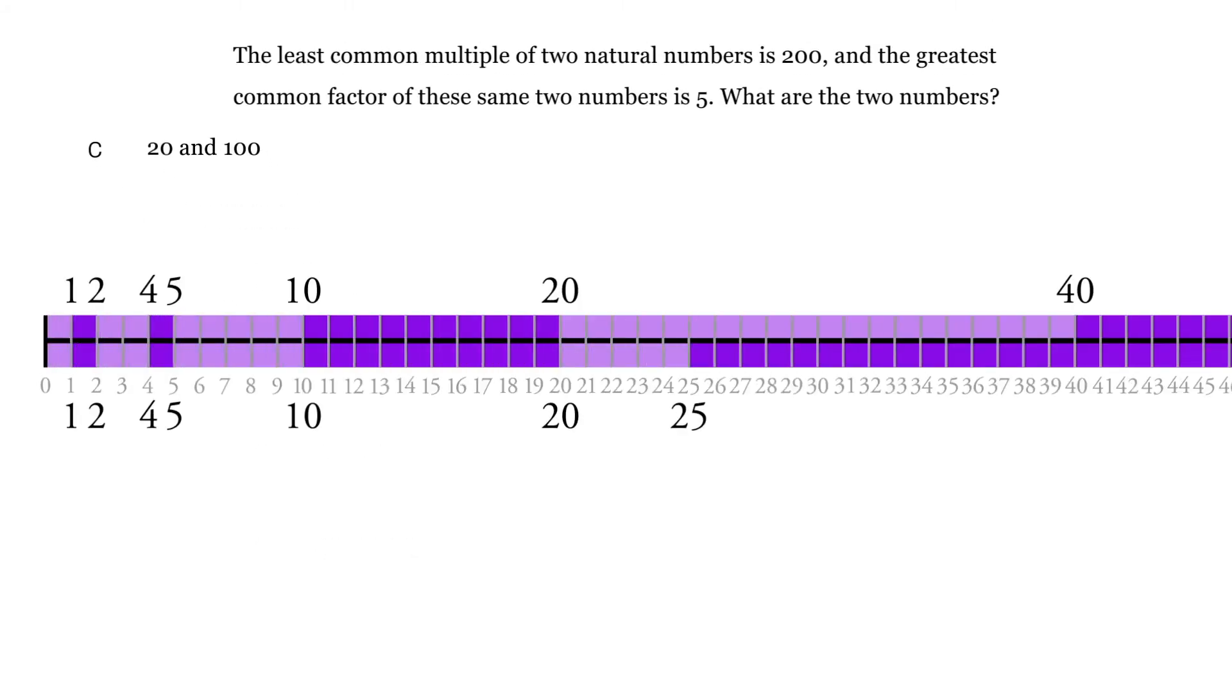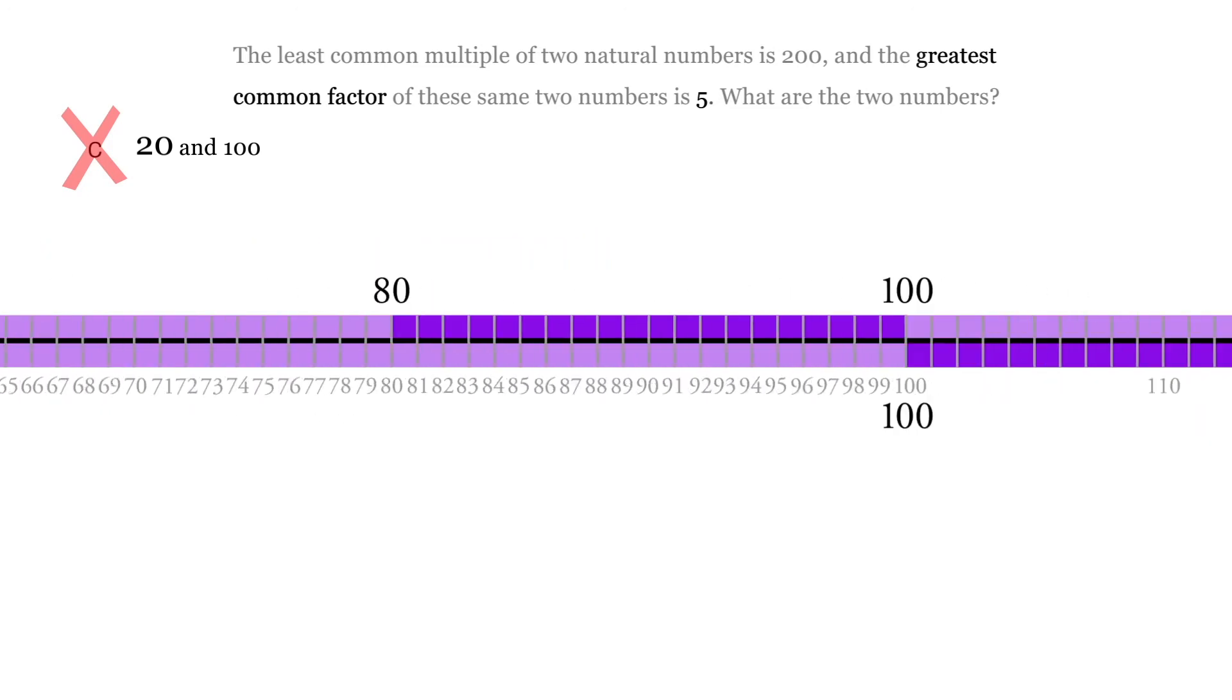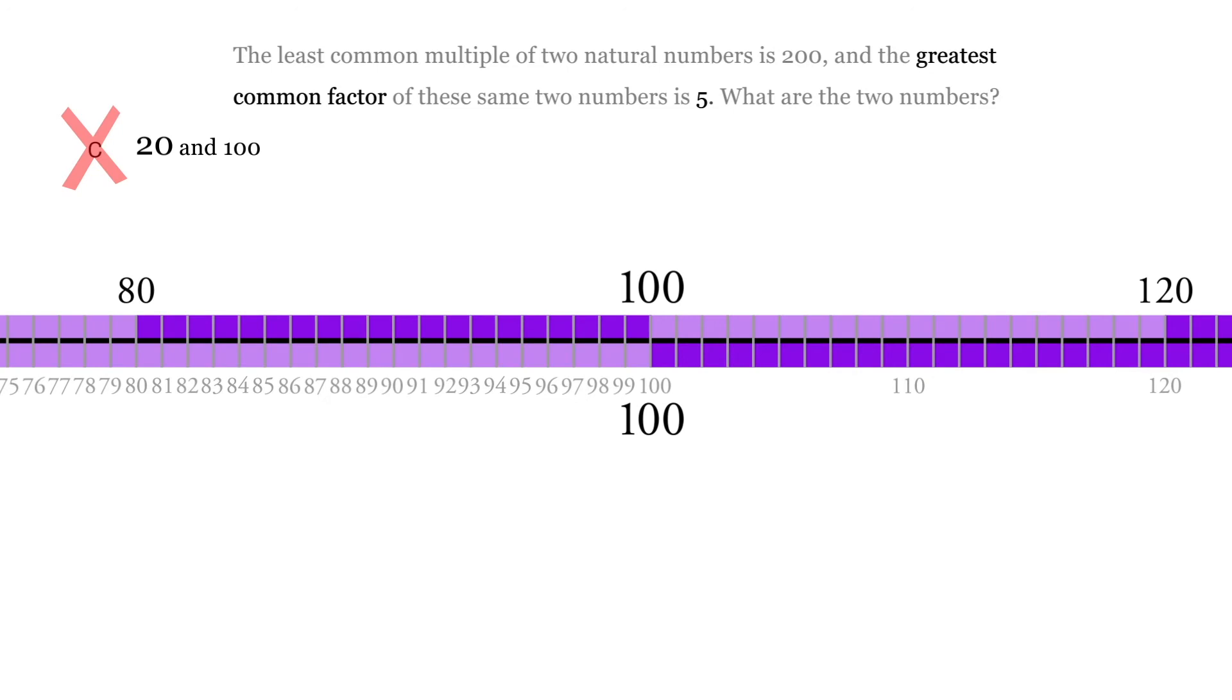This one, 20 goes into both of these. So in this case, 20 is the greatest common factor. And we have a greatest common factor we're given of 5. But in this case, 20 goes into 20 and 20 goes evenly into 100.